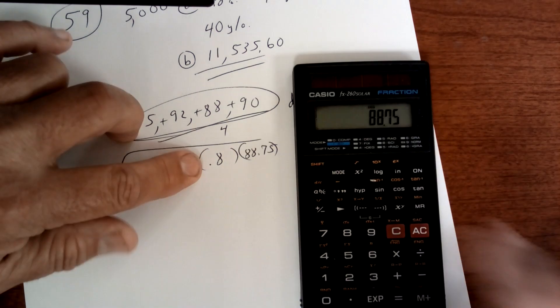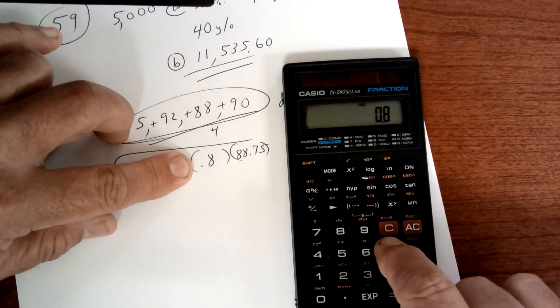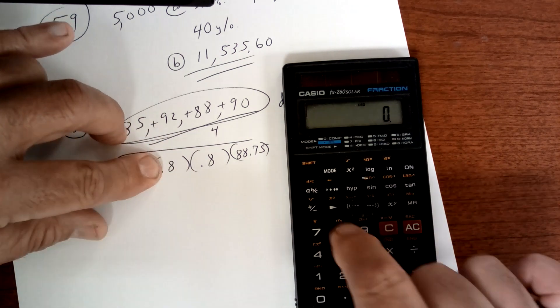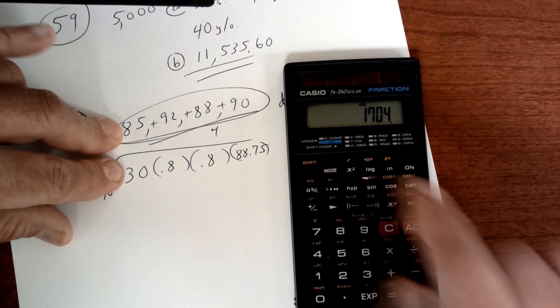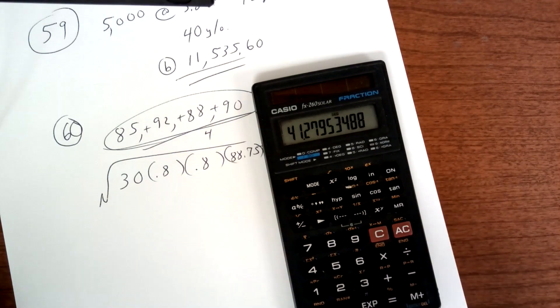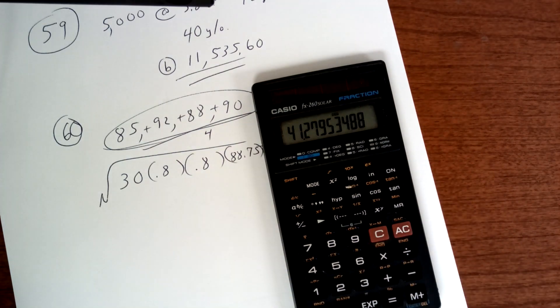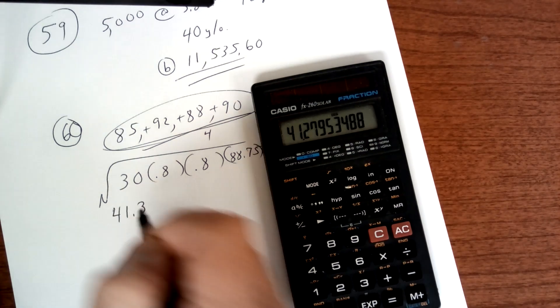So 85 plus 92 plus 88 plus 90 equals that. Divide by 4. And I get 88.75. We're going to multiply all of this. So times 0.8 times 0.8 again times 30. Press equals, hit shift, square root, and I get 41.3. And for this one, it is 41.3. Make sure you memorize that formula.